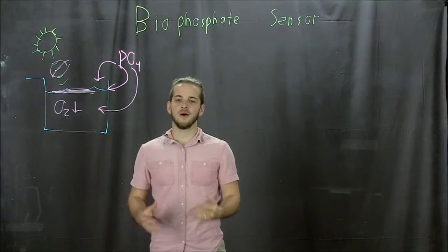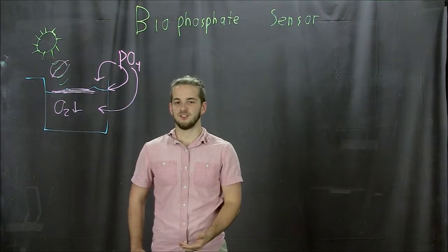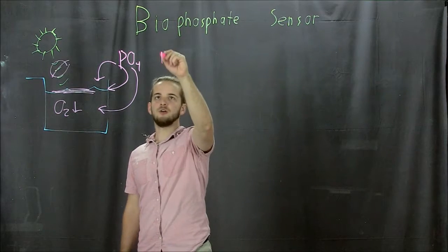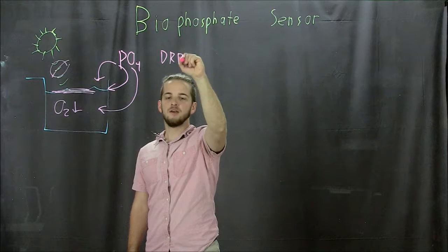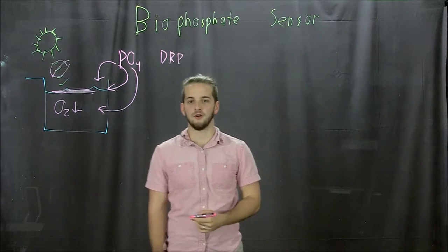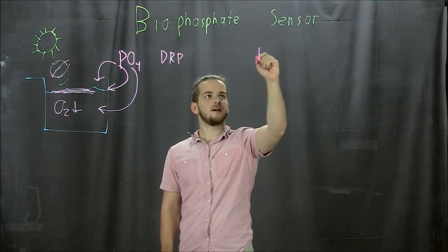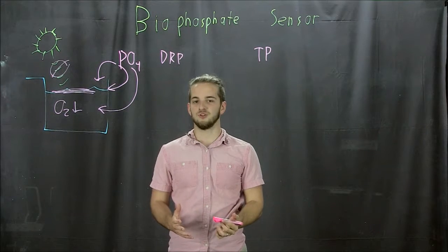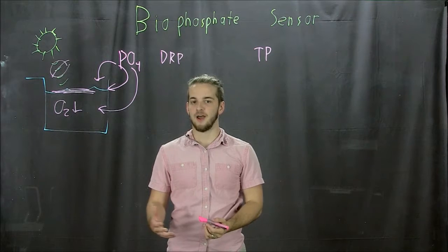Now methods of currently detecting phosphates are rather lacking. You can detect dissolved reactive phosphate, which is phosphate chemically free found in the water. You can also detect total phosphate, TP, which is the total amount of phosphorus in your system including inside the biomass.